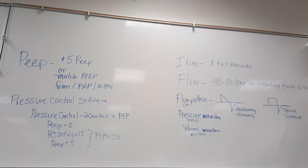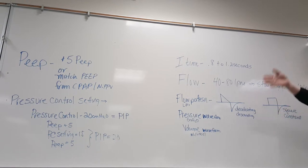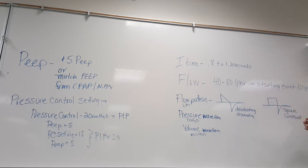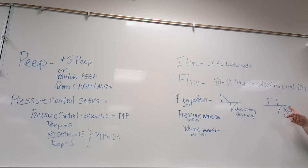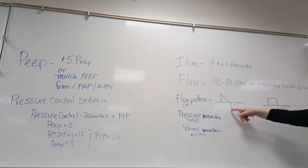In volume control, depending on the ventilator, some vents let you set the flow pattern and some you can't. If you're in volume control, it's either going to default to square or it's going to let you pick. The Galileo and the PB allow you to set the flow pattern in volume control.